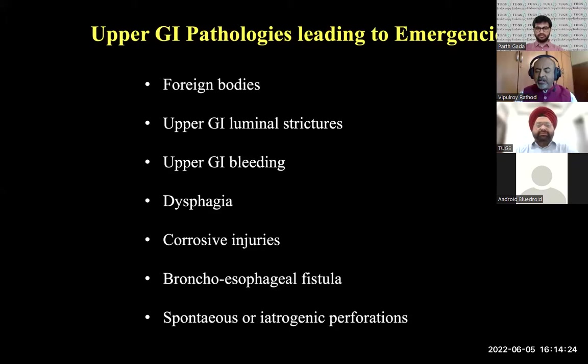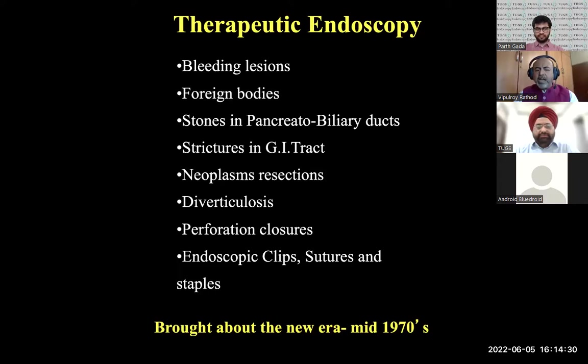We started treating bleeding lesions, foreign bodies, strictures, diverticular disease — all manageable with endoscopy. For perforation closures we have clips, sutures, and staples. All of this brought about an era of therapeutic endoscopy which started in the mid-1970s. In any clinical setting, it is important to have a very detailed clinical history and examination of the patient. Casualty room measures have to be met, and make sure the patient's vitals are stable — these are fundamental surgical principles we follow even for surgical emergencies.